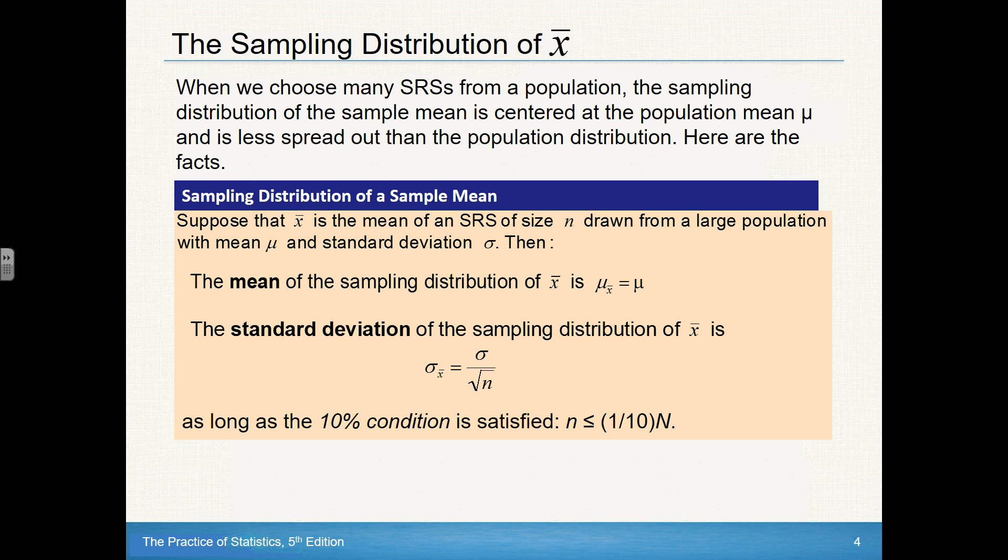Now, a couple things we want to take away from that. First of all, we know that the mean of the sample distribution of x bar, mu sub x bar, is mu. It's an unbiased estimator. The standard deviation, we know if we increase the sample size, then the standard deviation gets smaller. And again, that's going to be shown right here. We see that the standard deviation of x bar is the standard deviation of the population divided by the square root of n.